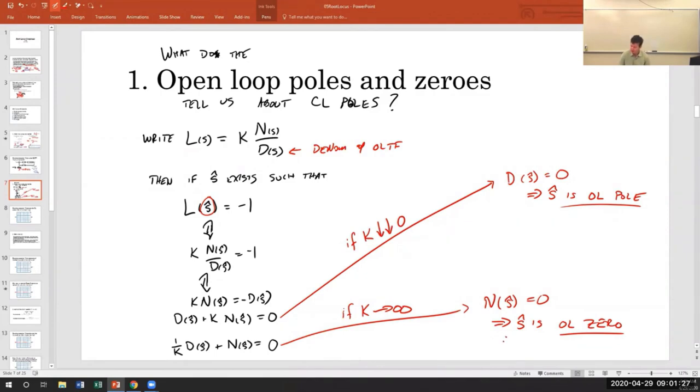Now, the weirdest thing is if we do the other way around, and if we let K get very big. Now, all of a sudden, the D term goes away, and we can approximate this by N of S-hat equals 0. Which means that S-hat is an open loop zero. Yeah, you heard me right. S-hat, a closed loop pole, approaches the open loop zeros. So that's the answer to this question, is they give us start and end points of the root locus. When K is small, when K is close to 0, the closed loop poles are near the open loop poles. But when K gets big, the closed loop poles are at or near the open loop zeros. I want you to chew on that for a couple days, and we will revisit it on Friday. Thanks, everyone.